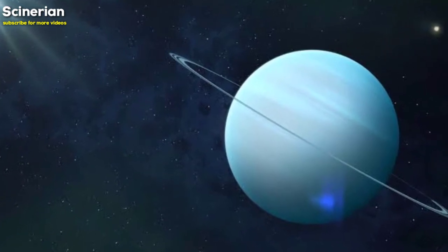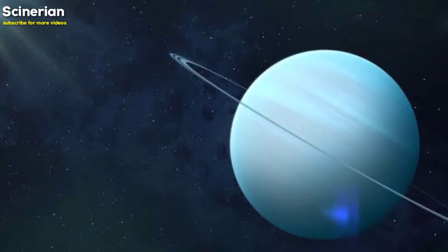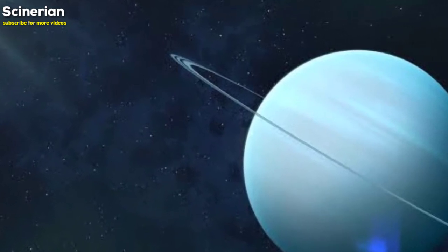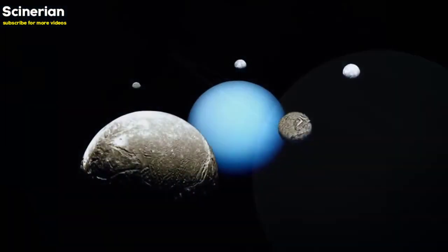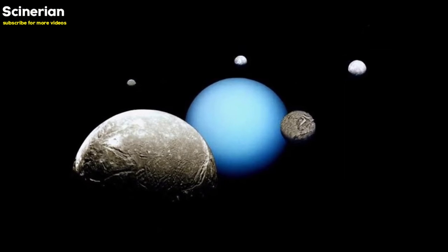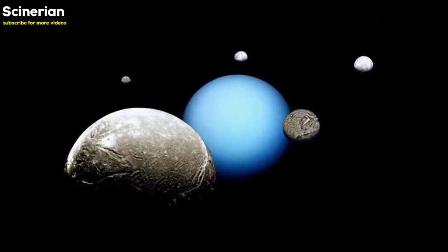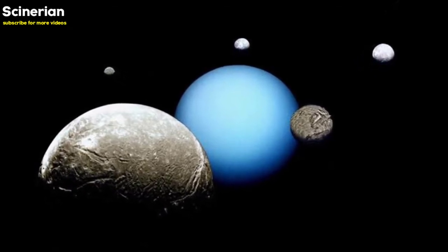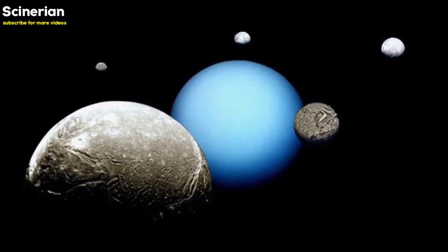Uranus rotates in the opposite direction than most planets, from east to west. Uranus has 13 known rings surrounding it, but they are difficult to observe. The reason why Uranus is blue is due to the presence of methane. The biggest moon of Uranus is Titania. It is the eighth largest moon in the solar system.